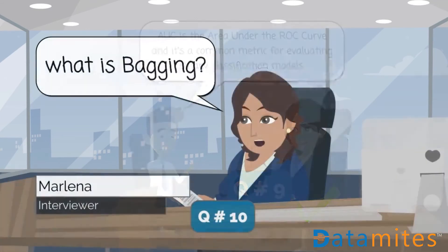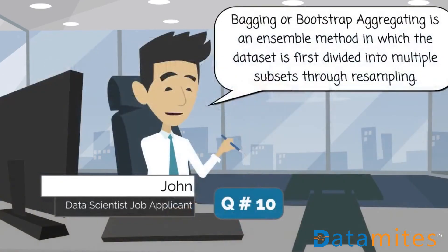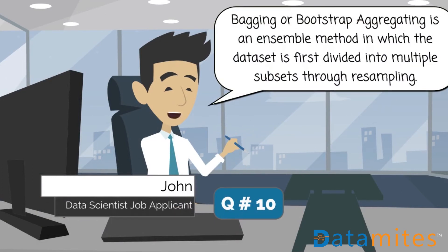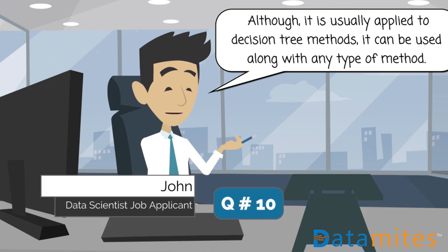What is bagging? Bagging, or bootstrap aggregating, is an ensemble method in which the data set is first divided into multiple subsets through resampling. Although it is usually applied to decision tree methods, it can be used with any type of method.